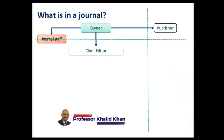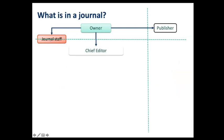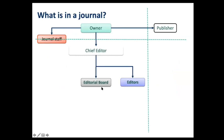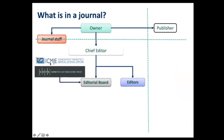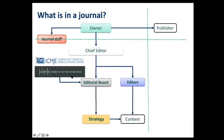A journal normally has an owner who employs administrative staff and a chief editor, and the owner also appoints a publisher. The chief editor appoints an editorial board and editors who follow the instructions of organizations like the International Committee of Medical Journal Editors or the Committee on Publication Ethics. With this framework, they create a strategy for the journal.